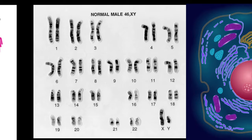In each pair of chromosomes, we got one chromosome from one parent — from the father's side — and another from the mother's side.